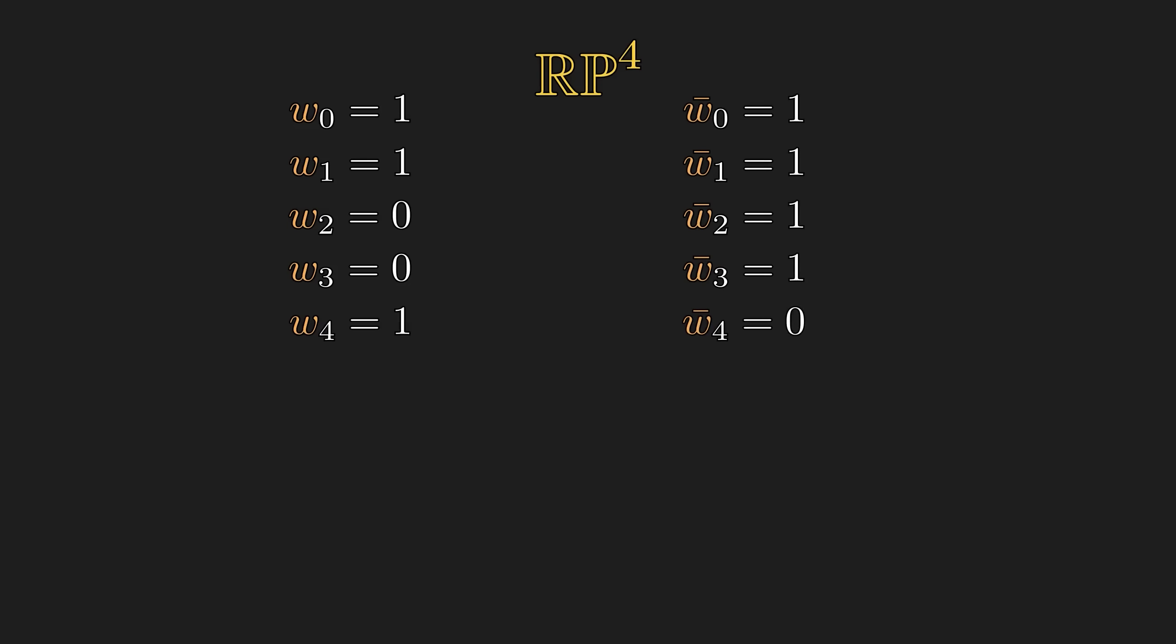Now, then the associated virtual normal bundle would have following classes. Since if we treat this as a polynomial and multiply the classes, we get 1, taking the result modulo x to the fifth and 2. Now, this implies that the combined ambient bundle is a trivial bundle.